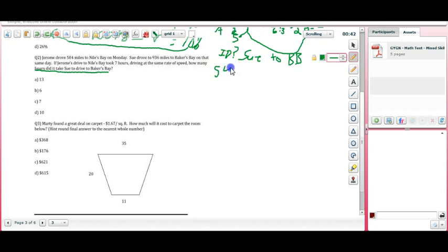We want to ID our question: how many hours did it take Sue to drive to Bakers Bay? Let's state our path. We know this is going to be a ratio-proportion problem because whenever we see driving at the same rate of speed, anything that indicates it's at the same rate, we know it's ratio and proportion. Jerome was 504 miles and he did that in seven hours. Sue drove 936 miles and we don't know how many hours. That's the question.